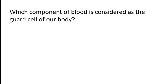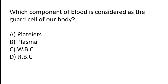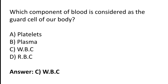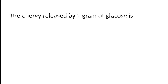Which component of blood is considered the guard cell of our body? Options: platelets, plasma, WBC, or RBC? The correct answer is option C — WBC is the component of blood considered as the guard cell of our body.